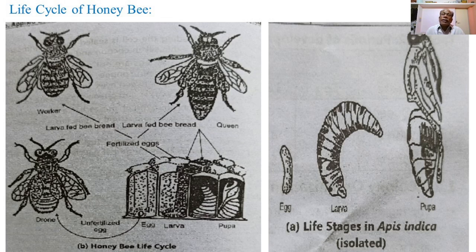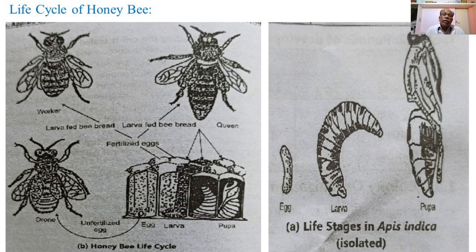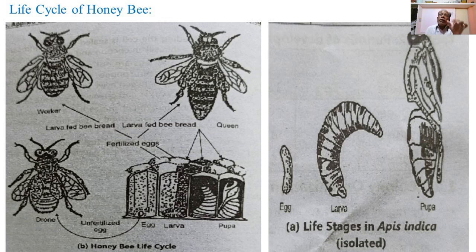The brood cells can be worker or drone brood cells, with larvae developing inside. In the first cell there is a small spherical or cylindrical egg at the bottom. In the second cell there is a small larva in the initial phase of development. In the third cell there is a larger C-shaped white mature larva, which then undergoes pupation in the last cell.